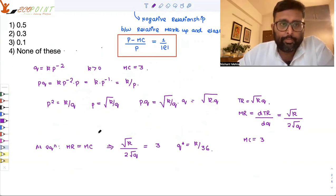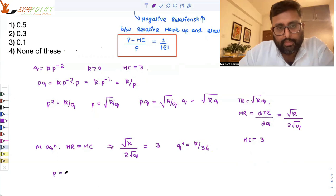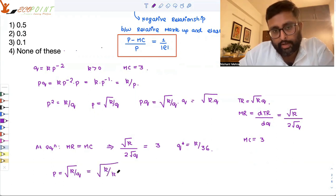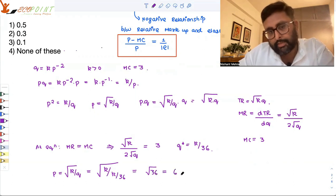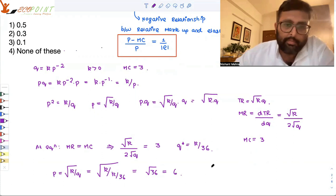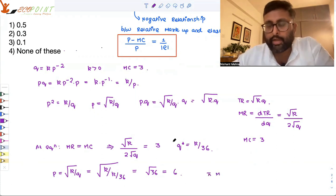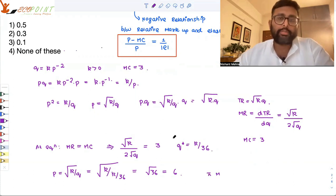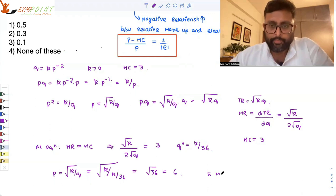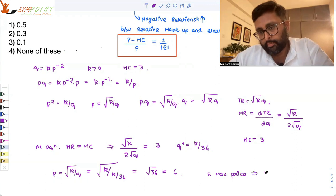I need to find out the price. So p is equal to root of k upon q. In place of q I can write k by 36. So that thing will come out to be root of 36, that will come out to be 6. This is nothing but profit maximizing price. Why? Because this has been calculated at the profit maximizing quantity. How is profit maximizing quantity calculated? MR equals to MC. So p equals to 6.